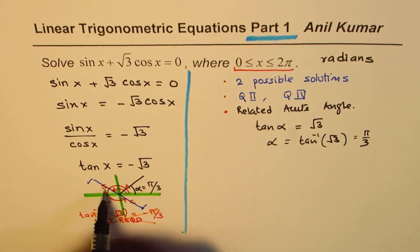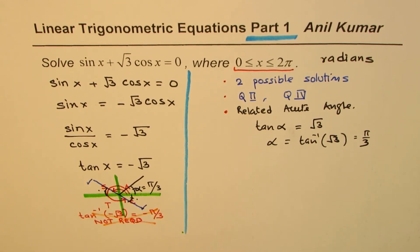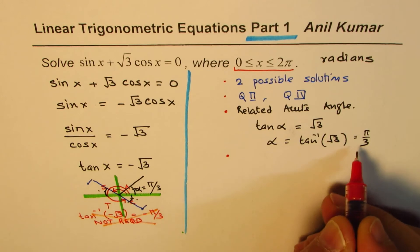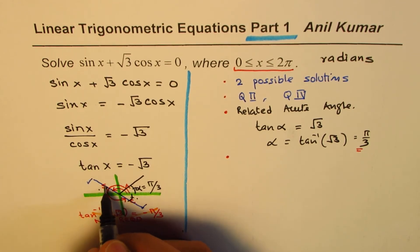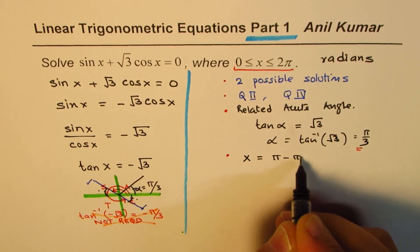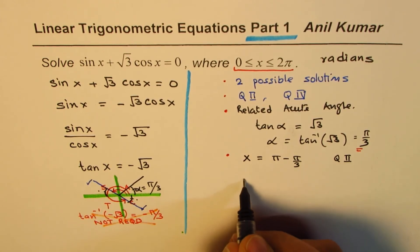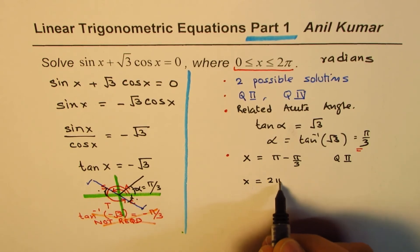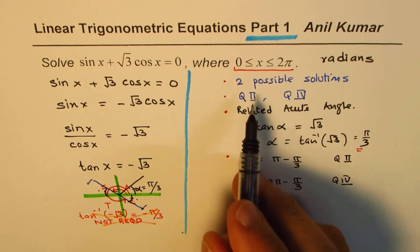Now that helps to find the real solution. So those are π by 3s. So these three angles which we made are π by 3. So we get both these solutions using related acute angle. So first solution is x equals to, so this one is x equals π minus π by 3. This is in quadrant 2. And the other one is x equals 2π minus π by 3, which is a solution in quadrant 4. So we get both these solutions.